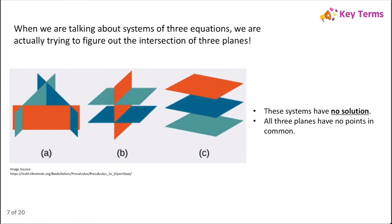You can also have systems that have no solution. The reason is because all three planes will have no points in common. In cases A and B, two of the planes have lines in common but all three don't share any points. Case C shows a system where no planes have any points in common. All three of these situations give us a system with no solution.